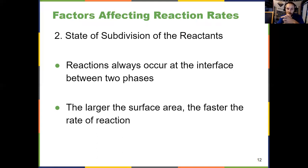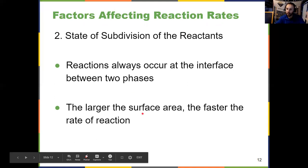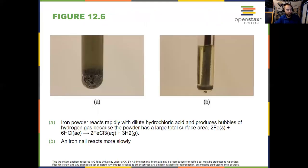Number two, the state of subdivision of the reactants. And another way to say this is surface area. The reason for this is reactions always occur at the interface between two phases. These things actually have to interact with one another and be touching. So the larger the surface area of something, the faster the rate of reaction. Looking at an example right here of having an iron nail in a reaction with HCl versus iron powder. The iron powder reacts a lot faster because it has more surface area. Even though it's iron in both situations, more surface area will react faster. More surface area, faster reaction.